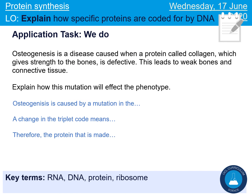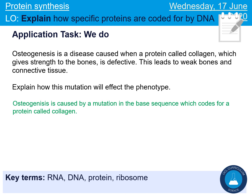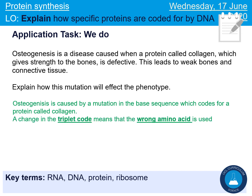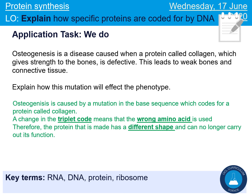Let's look at another example — pause the video and have a go on your own. For osteogenesis imperfecta, the first part is specific to the context: the disease is osteogenesis and it's caused by a mutation in the base sequence coding for the protein collagen. The next part should be the same: that changes the triplet code, meaning a different or wrong amino acid is used, and that in turn means the protein has a different shape.